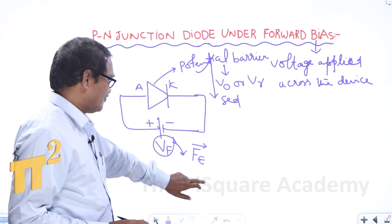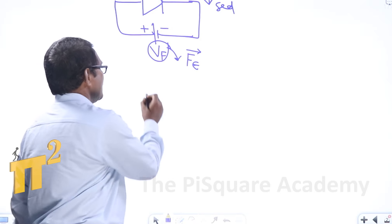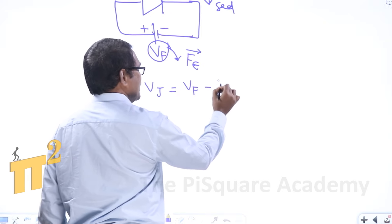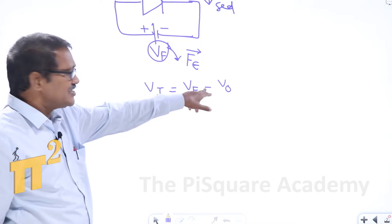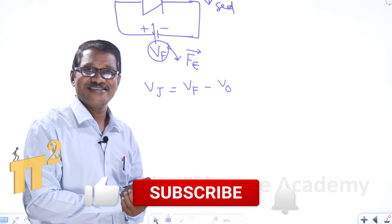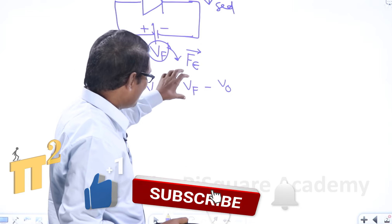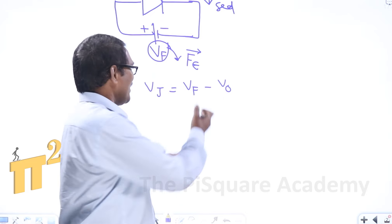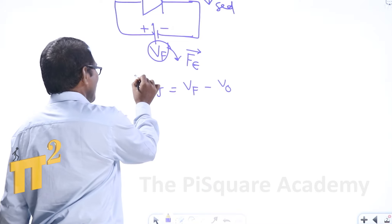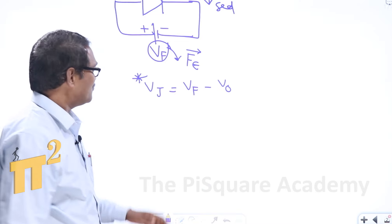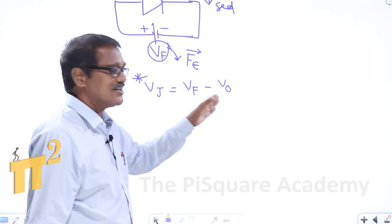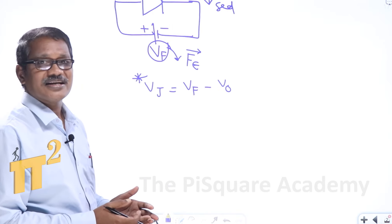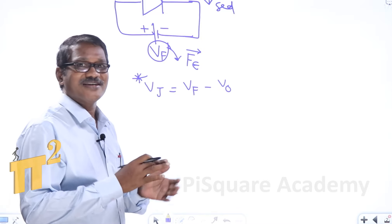Under forward biased conditions, the junction voltage Vj is represented as Vj = Vf minus V0. This minus sign represents that the force due to the external potential is opposite to the force due to the potential barrier. That is why it is represented with a minus sign. This is important for competitive examinations. The junction voltage under forward biased conditions is Vf minus V0.